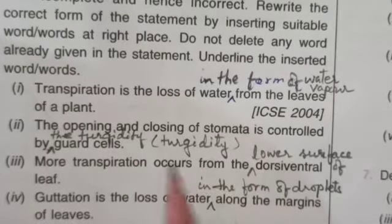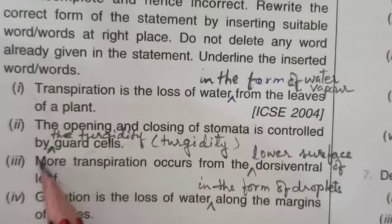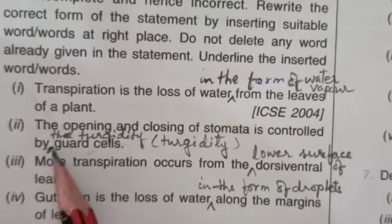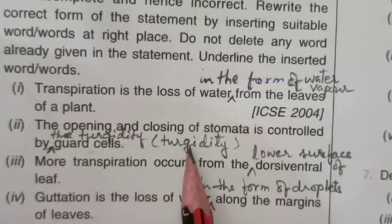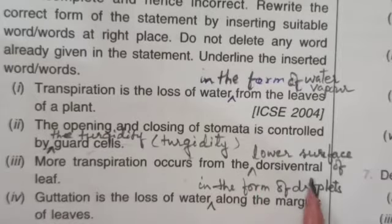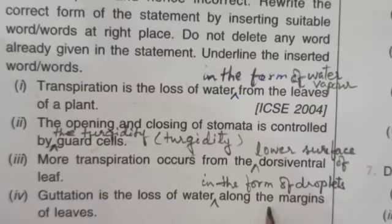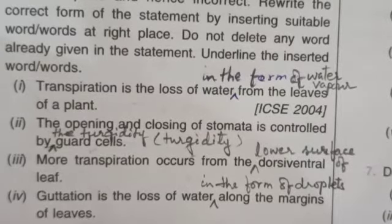Second: the opening and closing of stomata is controlled by the turgidity of the guard cells. Third: more transpiration occurs from the lower surface of a dorsiventral leaf. Fourth: guttation is a loss of water in the form of droplets along the margins of the leaves.